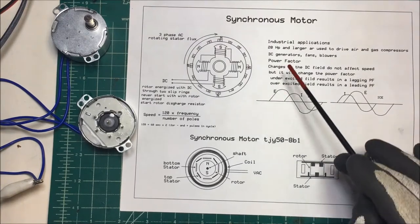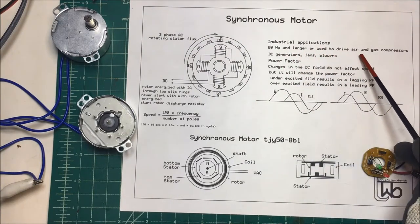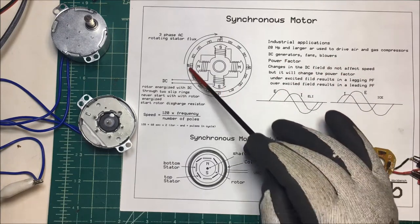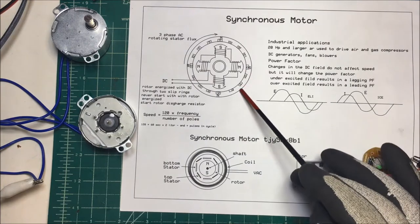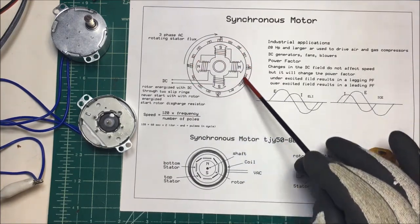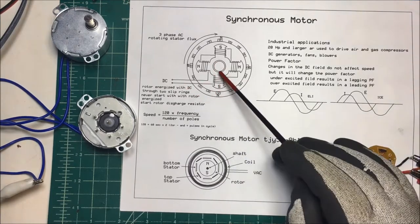Let's talk about synchronous motors. In industrial applications, they're usually 20 horsepower and larger, and they're used to drive air and gas compressors, DC generators, fans, and blowers. The stator out here is just like the stator in a three-phase squirrel cage motor, but the rotor here is powered with DC and it's powered through a set of slip rings.